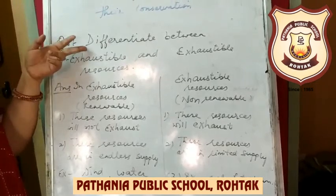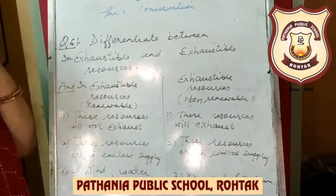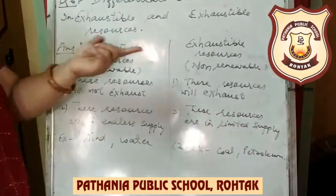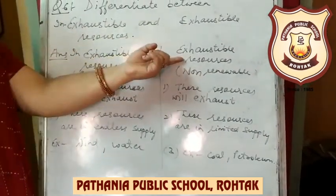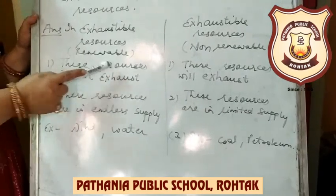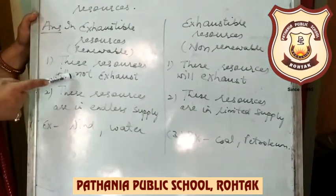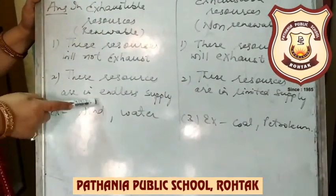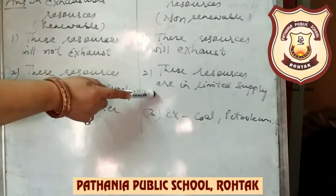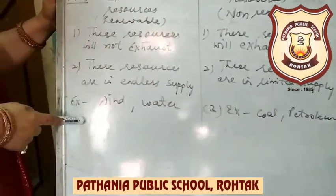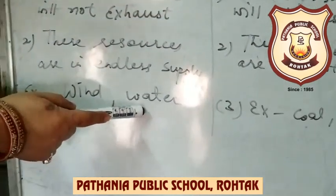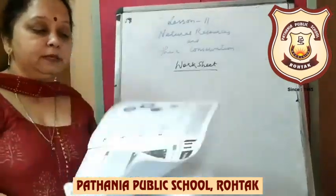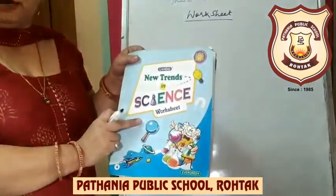Question number six — the extra question: Differentiate between inexhaustible and exhaustible resources, or differentiate between renewable and non-renewable resources. First point: renewable resources will not exhaust; exhaustible resources will exhaust. Second: renewable resources are in endless supply; exhaustible are in limited supply. Third, examples: wind and water are inexhaustible; coal and petrol are exhaustible.